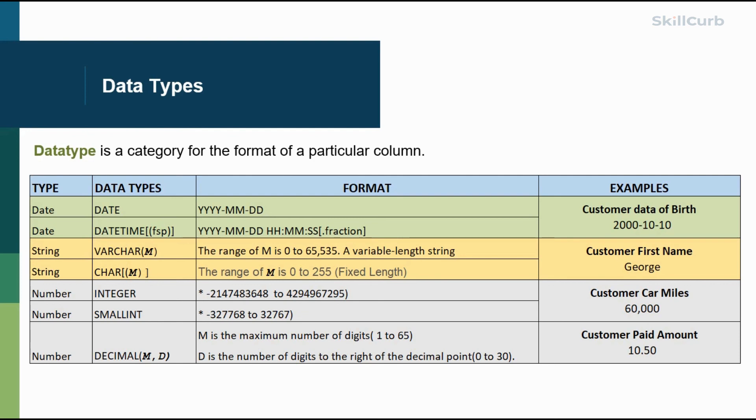have decimal places, we want to represent like for instance a customer paid amount - like if you paid for a Starbucks coffee and the amount was some dollars and some cents - we can represent that by a data type of decimal. If you know the data types and the category of date, strings, and numbers, you can do majority of the data analysis knowing these data types.